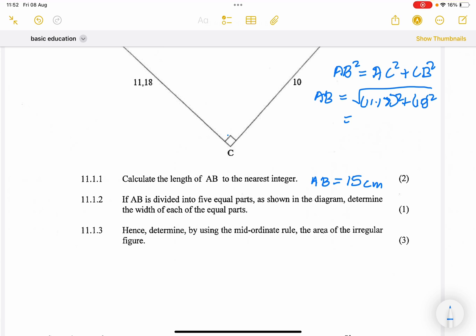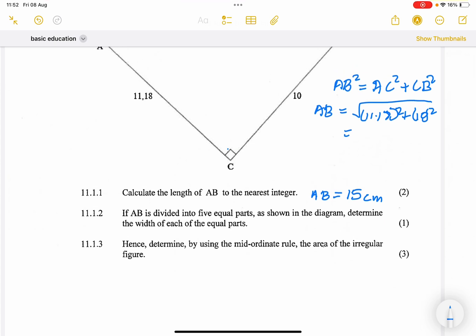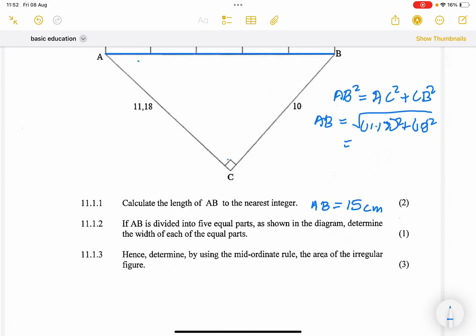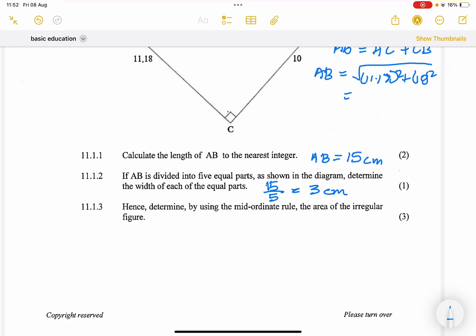Now they say if AB is divided into 5 equal parts, as shown in the diagram, determine the width of each of the equal parts. So if it's divided into 5 equal parts, which means each of the parts will be 15 divided by 5, and so that would be 3 centimeters each. So no need to be creative there.